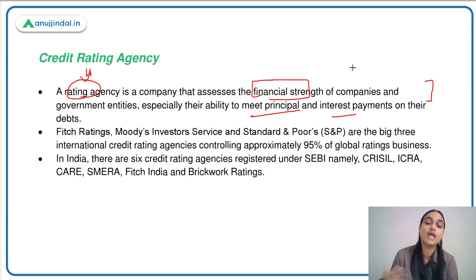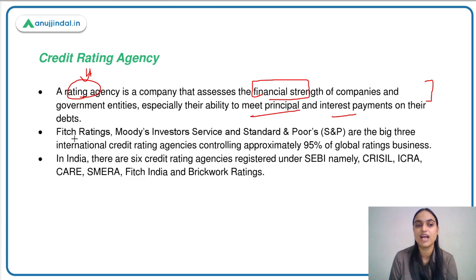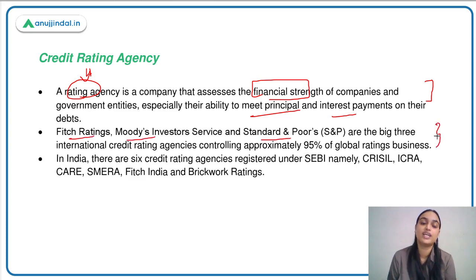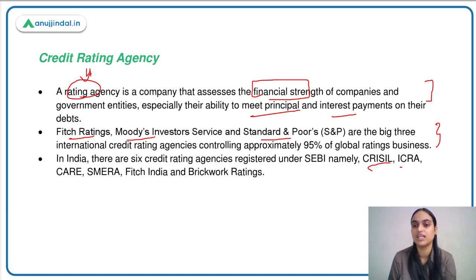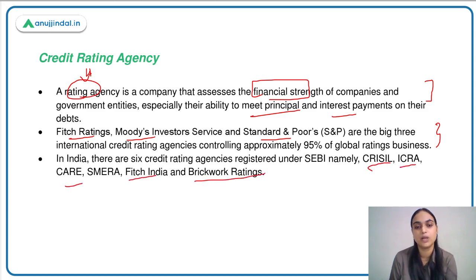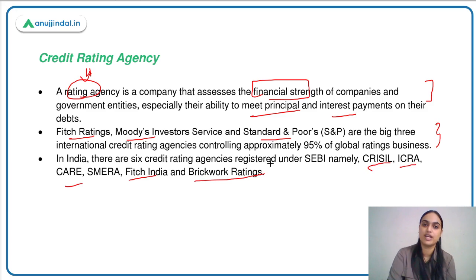If I talk about some big credit rating agencies operating globally, we have Fitch Ratings, Moody's, and S&P — they are the major rating companies. Talking with respect to India, some of the rating agencies registered with SEBI include CRISIL, ICRA, CARE, SMERA, Fitch India, and Brickwork Ratings. These are some of the credit rating agencies operating in India.